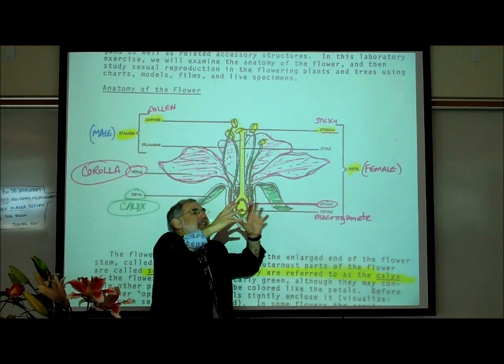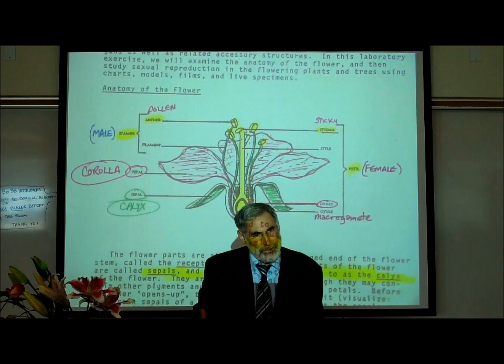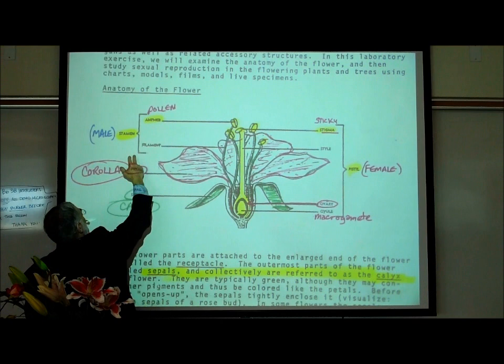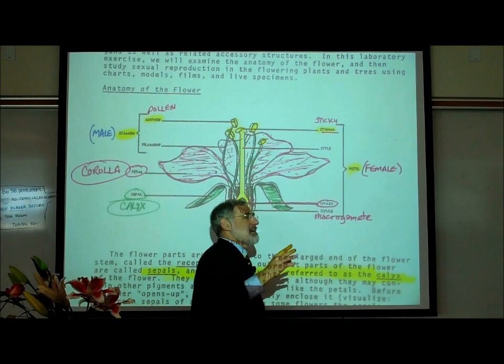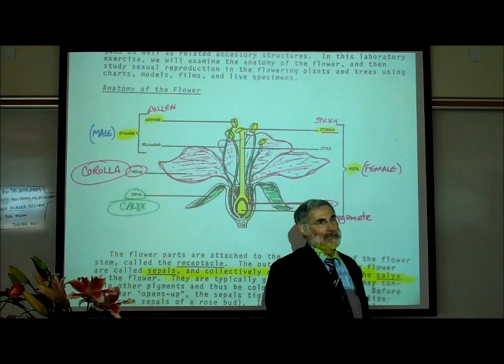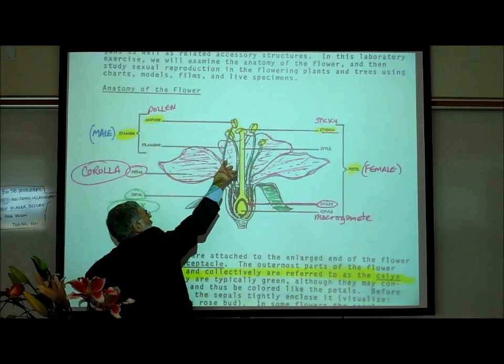Surrounding the female pistil are usually many stamens — the male part of the flower. The number of stamens relates to whether it's a monocot or dicot: monocots have three or multiples of three stamens; dicots have four, five, or multiples thereof. The very top of the stamen is called the anther, usually yellow or orange because it's covered with pollen. Pollen are the microgametes — like sperm. Below the anther is a long structure called the filament.